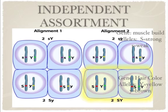Because there are equal numbers of genotypes, we can say that the alleles of the s and y genes assort independently during meiosis. Note that alleles of different genes always sort independently if the genes reside on different chromosomes, but not necessarily if they reside on the same chromosome.